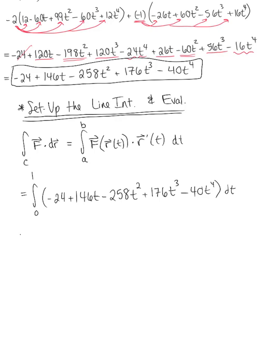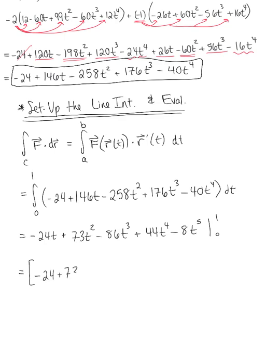Integrating using the power rule, we get minus 24t plus 73t squared minus 86t cubed plus 44t to the fourth minus 8t to the fifth, evaluated from 0 to 1. Since our bounds are nice, plugging in 1 simply gives minus 24 plus 73 minus 86 plus 44 minus 8, and substituting 0 gives zero. Combining all like terms, we are left with the final answer of negative 1.